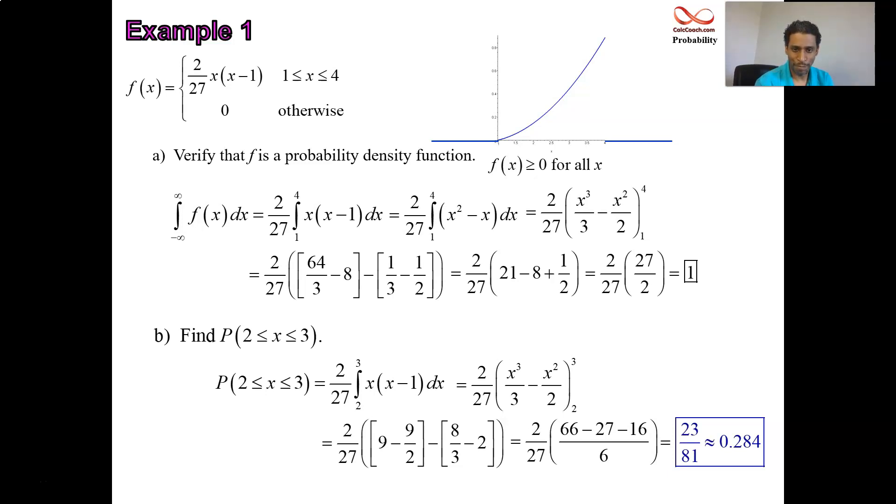Okay. If you go to a computer or something, you try to figure out to get a feel for what that number is, that's 28%. There's a 28% chance. 28% of the area is between 2 and 3.